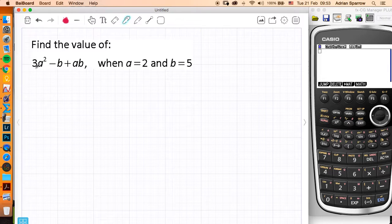So, I've got 3A squared, and A is 2, minus B, B is 5, plus AB, that means A times B. So I'm just going to write out what I need to do. So it's 3A squared is like that, minus 5, plus 2 times 5.